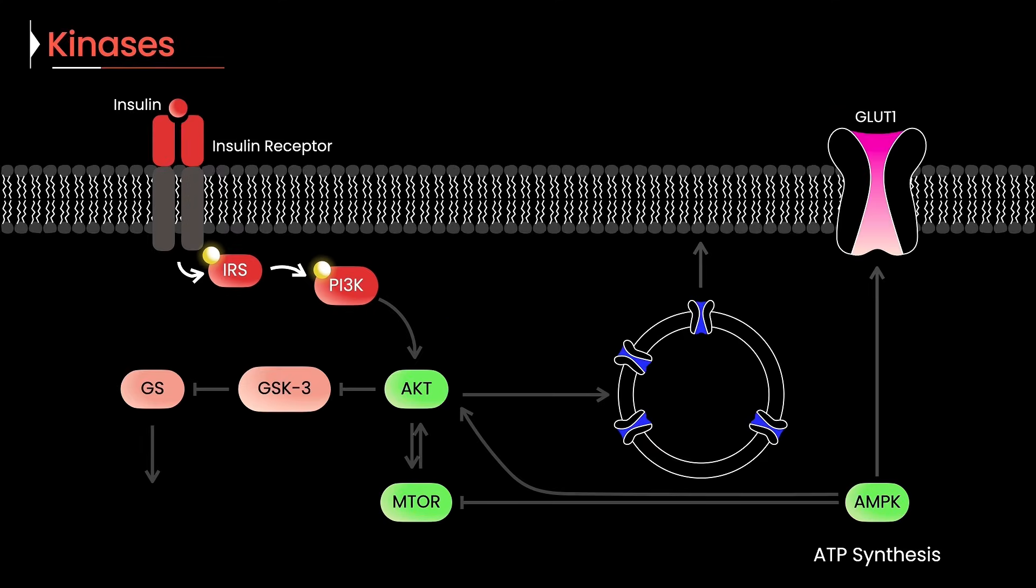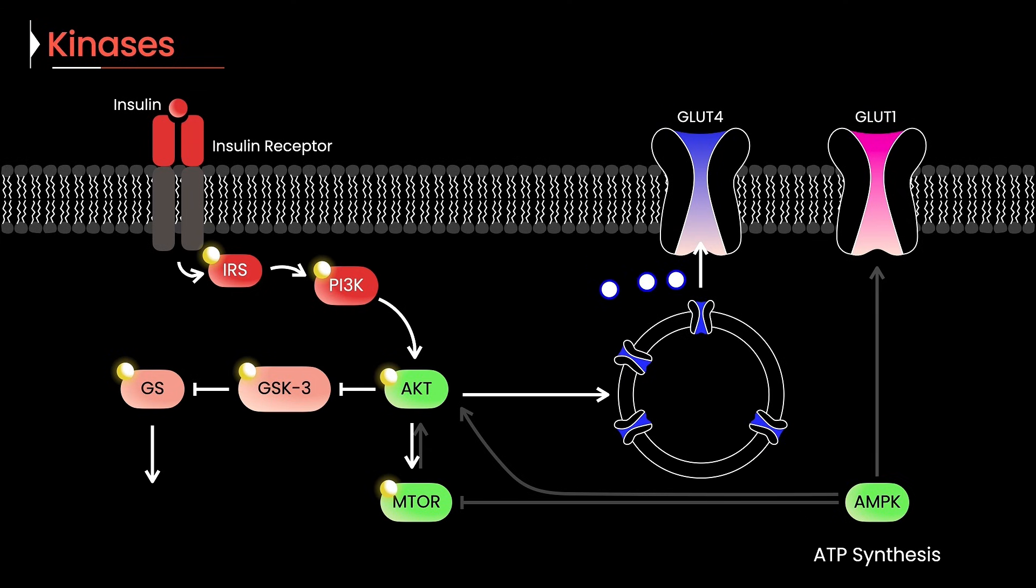And it tags the next protein in line, and on and on it goes. These phosphate-adding proteins are called kinases. Think of them as the wires and switches of the cell's communication system.